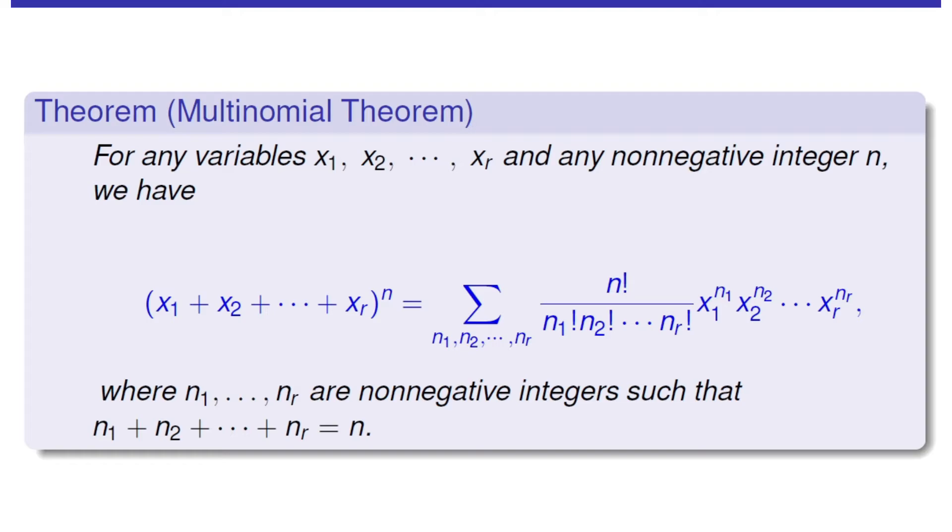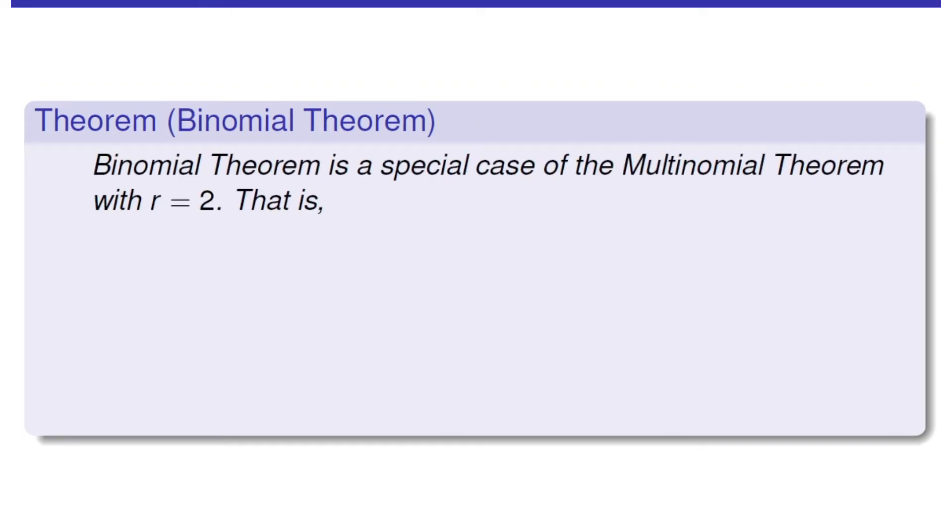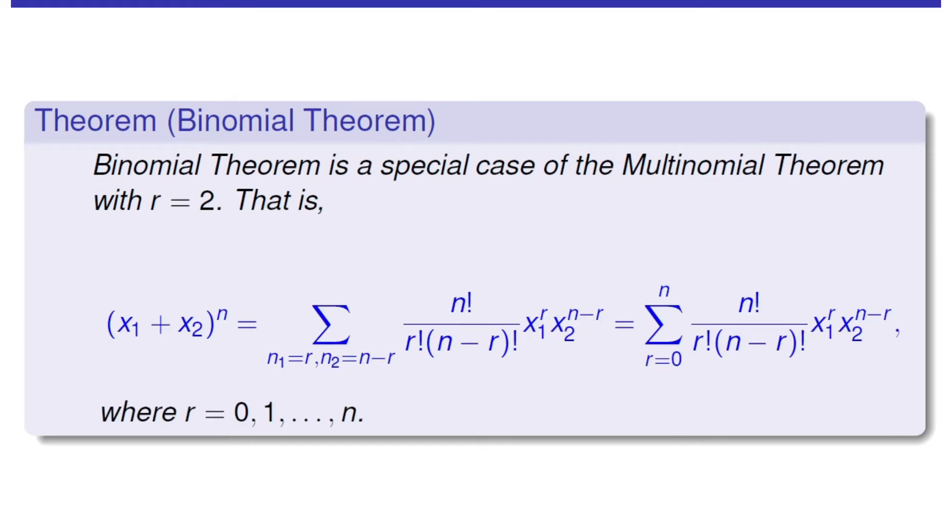Now, there is some special cases for this multinomial theorem. Firstly, we have so-called a binomial theorem. This is when r equals 2. Now we have this formula.